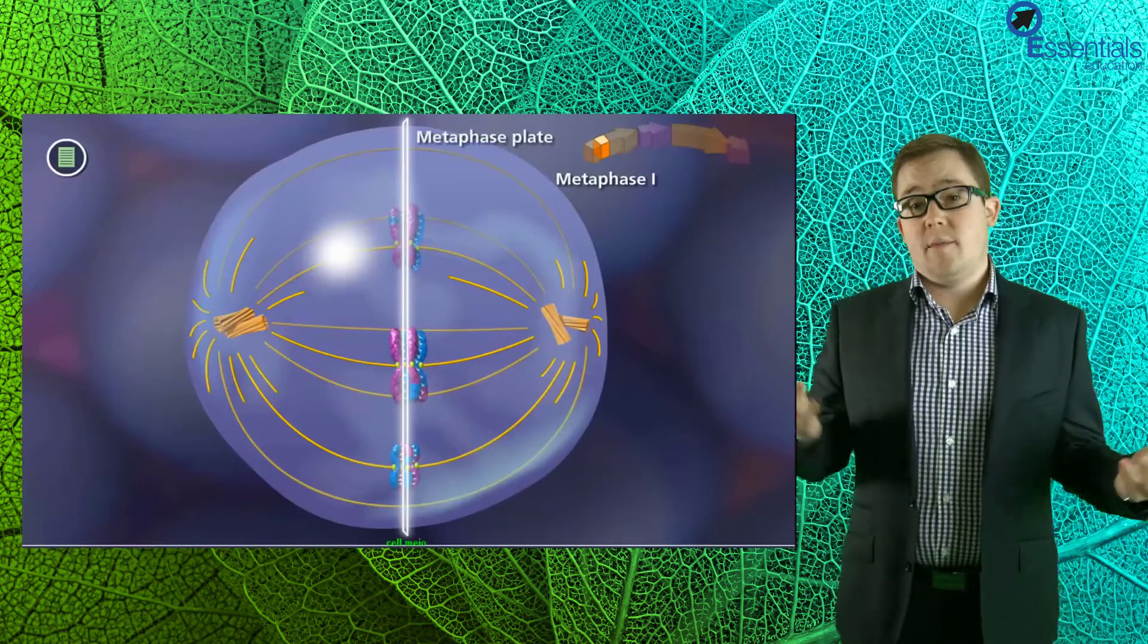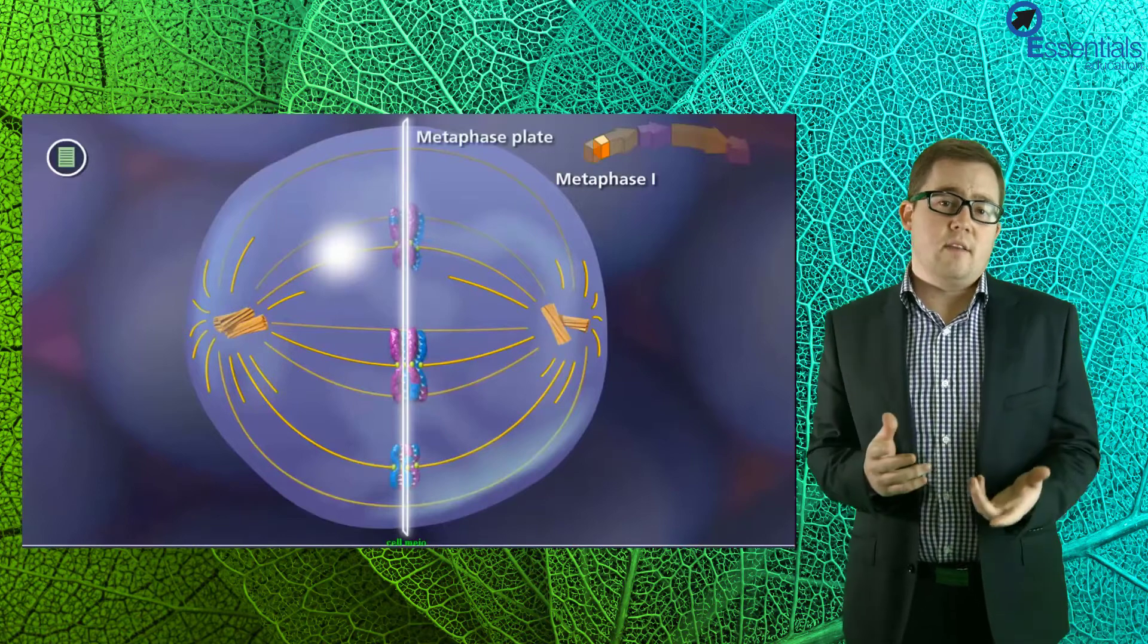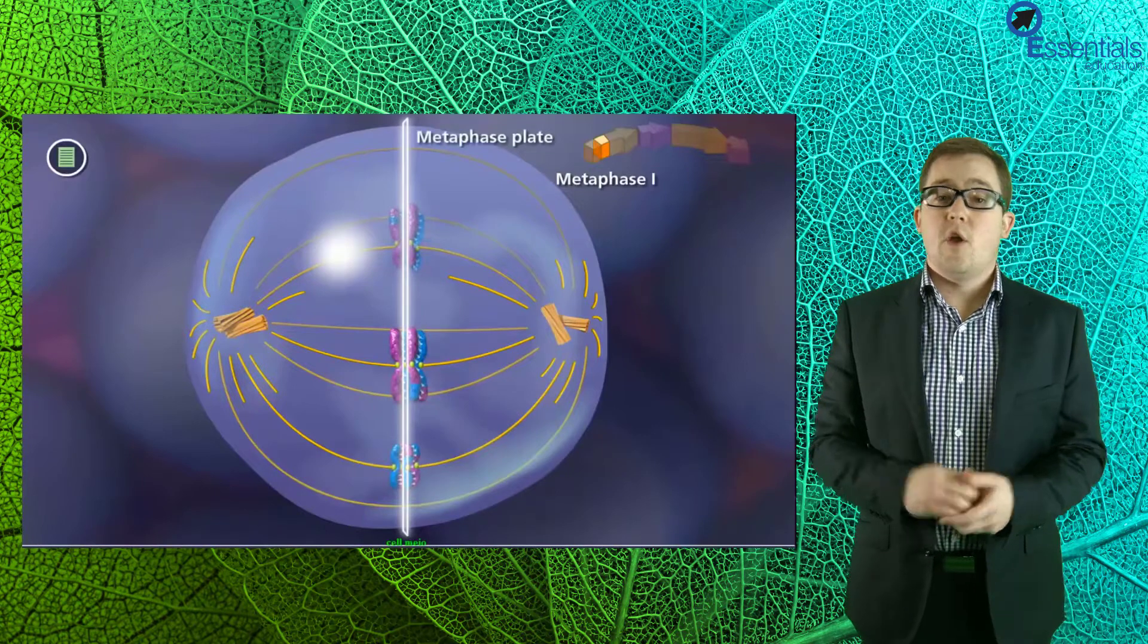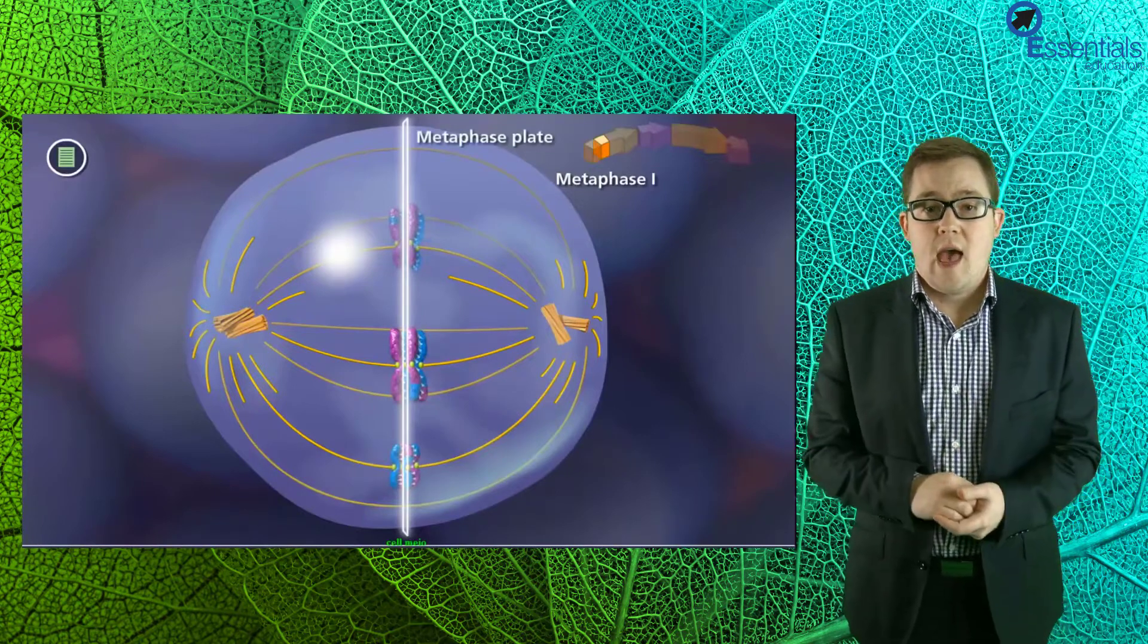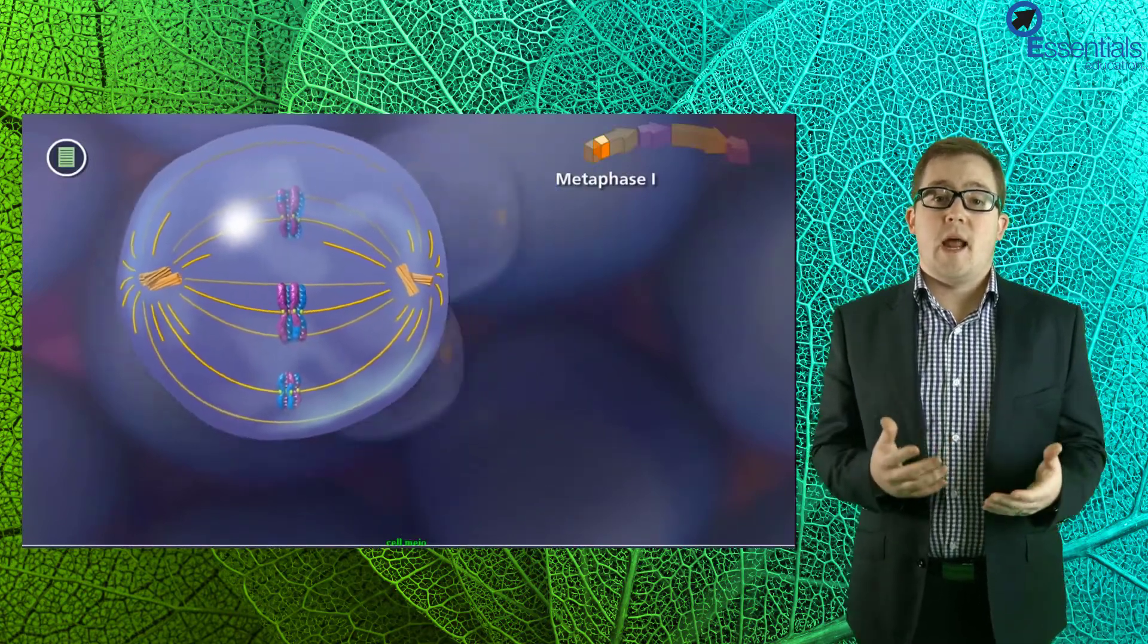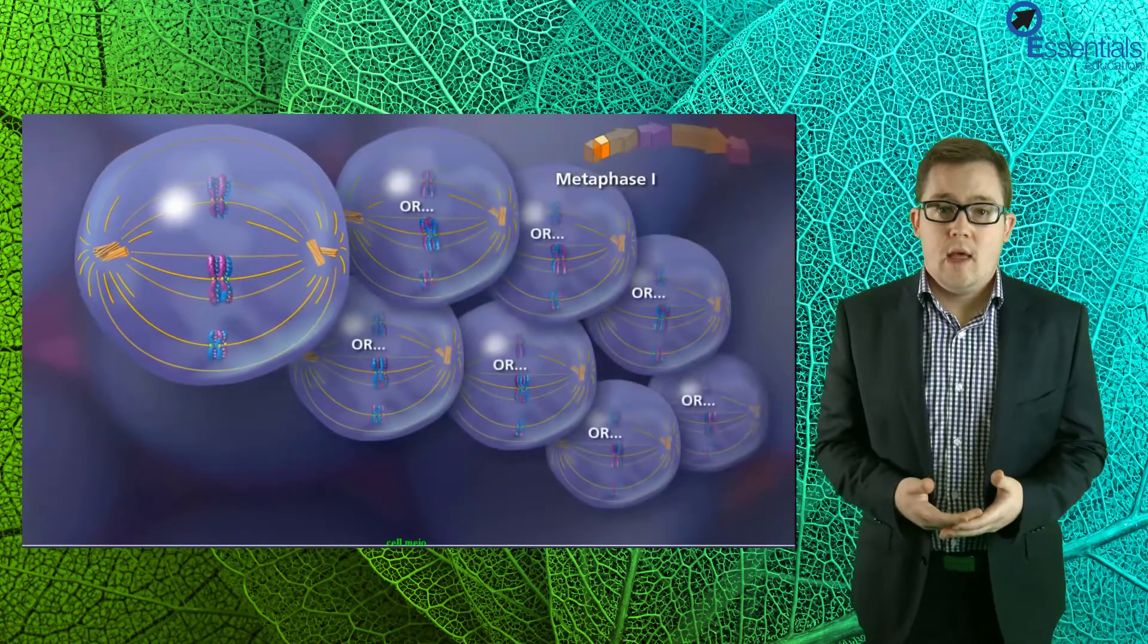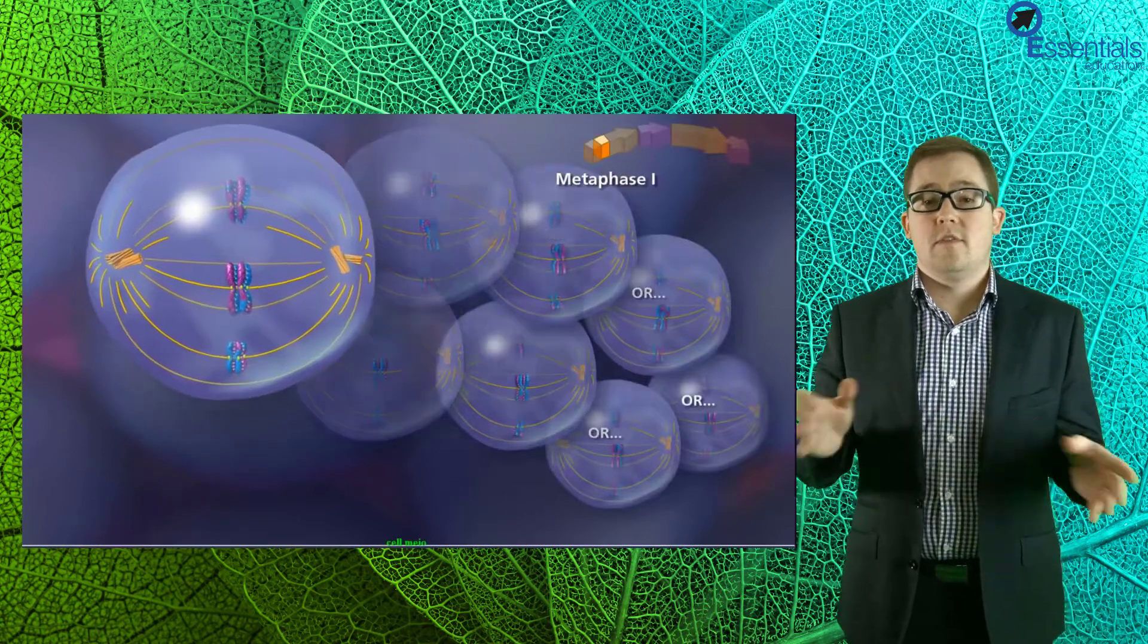Now of course you're going to line up next to your partner because it may result in a fight if you don't, but how likely is it that all the girls will line up on one side and all the boys on another? Not very I would think. And again, this also happens in your cells and is our second source of variation called independent assortment. The homologous chromosomes line up with their partner in the middle of the cell but do so randomly, and this will result in a random mix of maternal and paternal chromosomes when the two new cells are formed.